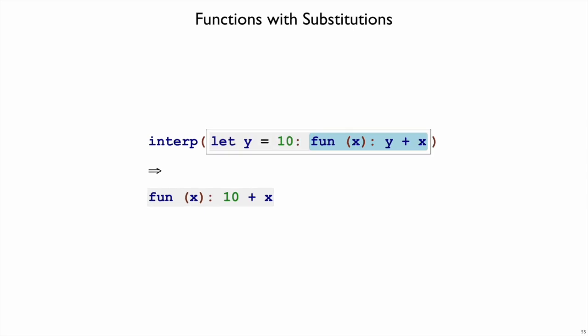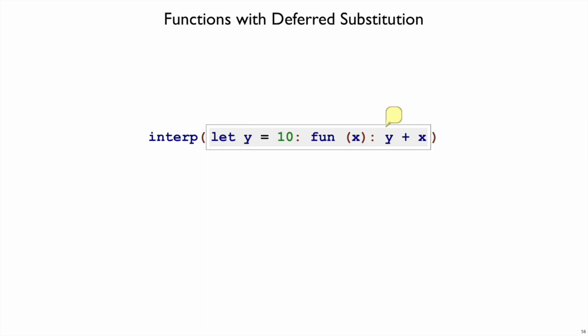Let's consider that example now when we have environments, that is, deferred substitutions instead. We start out with the empty environment, and then let evaluates 10 and decides that y will be 10 in the environment, and then moves on to the body of the let, which is this function form. And now the result should be a function form, but there's a y sitting there instead of a 10 now. We need to somehow remember that y is equal to 10, and we don't want to fall back to substitution, because we already know that has certain performance problems.